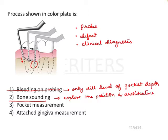The next option is pocket measurement. Pocket measurement is not to a bony level — it is not a bony level kind of procedure. It is only soft tissue; you place the probe in the sulcus and measure the depth of the pocket. So this is not a correct option.